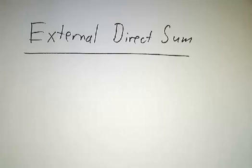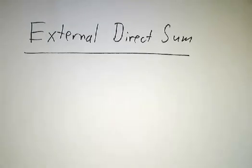In this video and the videos that follow, we're going to talk about three ways to build new vector spaces out of old vector spaces. The first one of these is called the external direct sum.